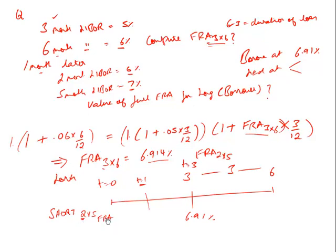If we were to complete a 5-month borrowing today at 7%, borrowing $1 for 5 months means paying 1 + 0.07 × (5/12) at the end. Alternatively, borrow for 2 months — paying 1 + 0.06 × (2/12) — and then refinance for 3 months to complete the 5-month borrowing. Please note rates are annualized; in LIBOR the convention is actual/360, but since actual days are not given, we assume 1 month = 1/12 of a year.